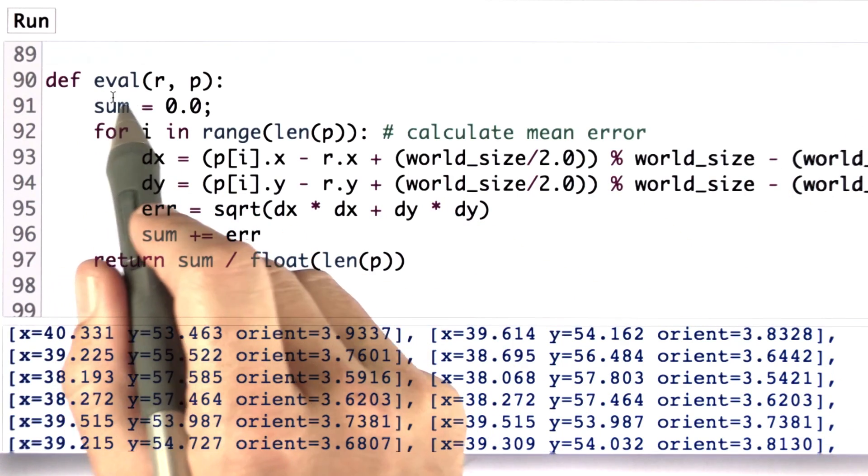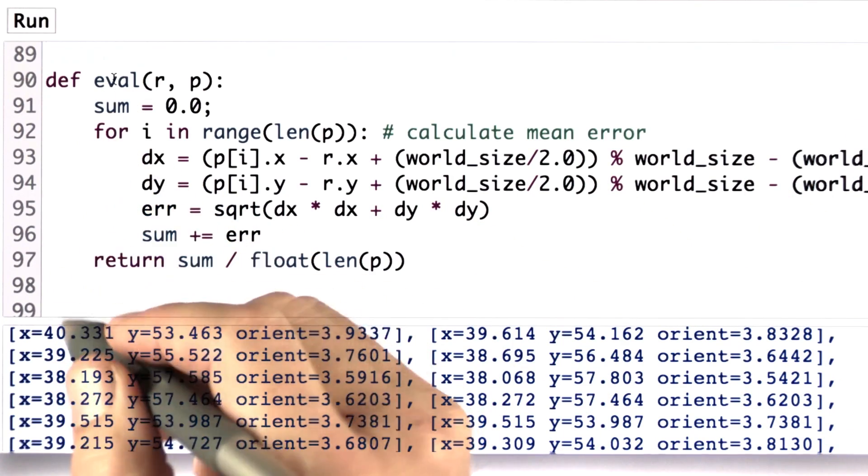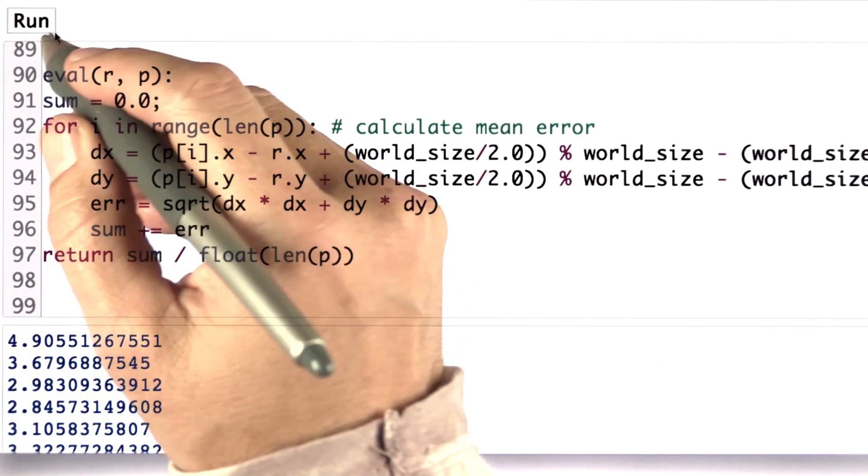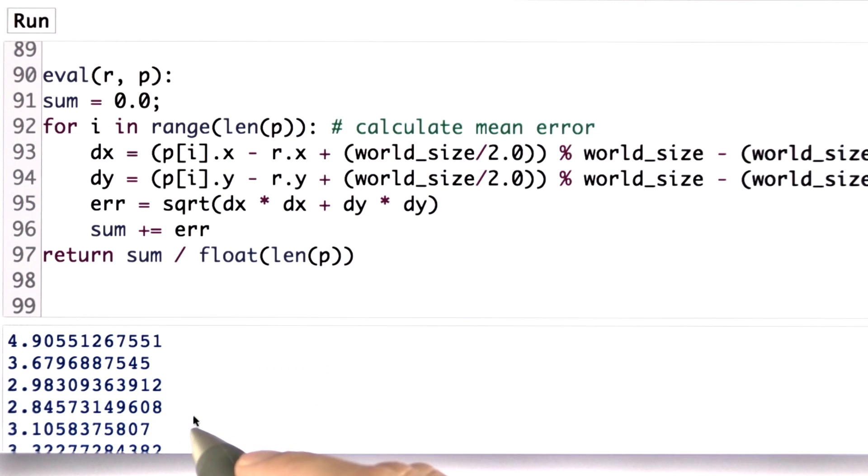I want you to take the function eval and produce a sequence of performance evaluations. And when you hit the run button, I want you to produce something like this.